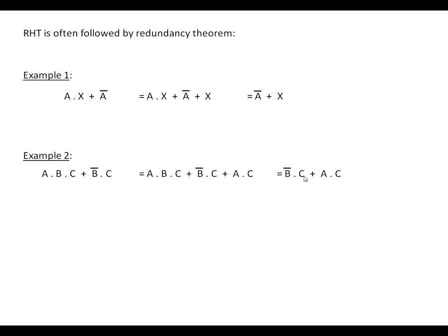There we have it - it simplifies down to this. It's not much more simple, but there is one more stage we can do. We notice that both terms - B, not-B, and A - are all ANDed with C, so we just tidy it up with some brackets there.